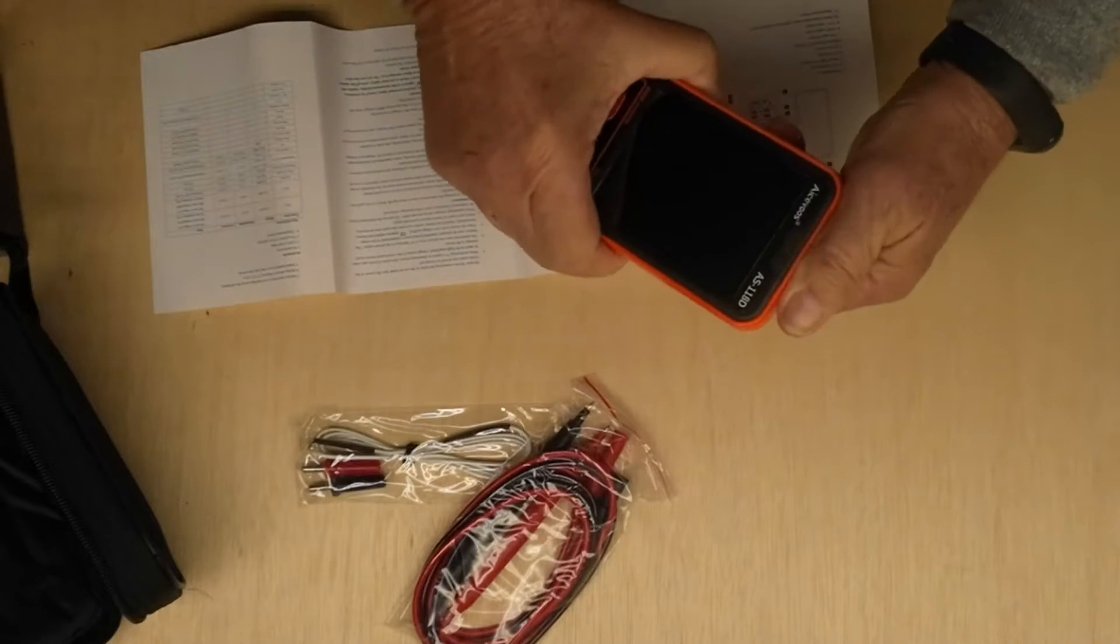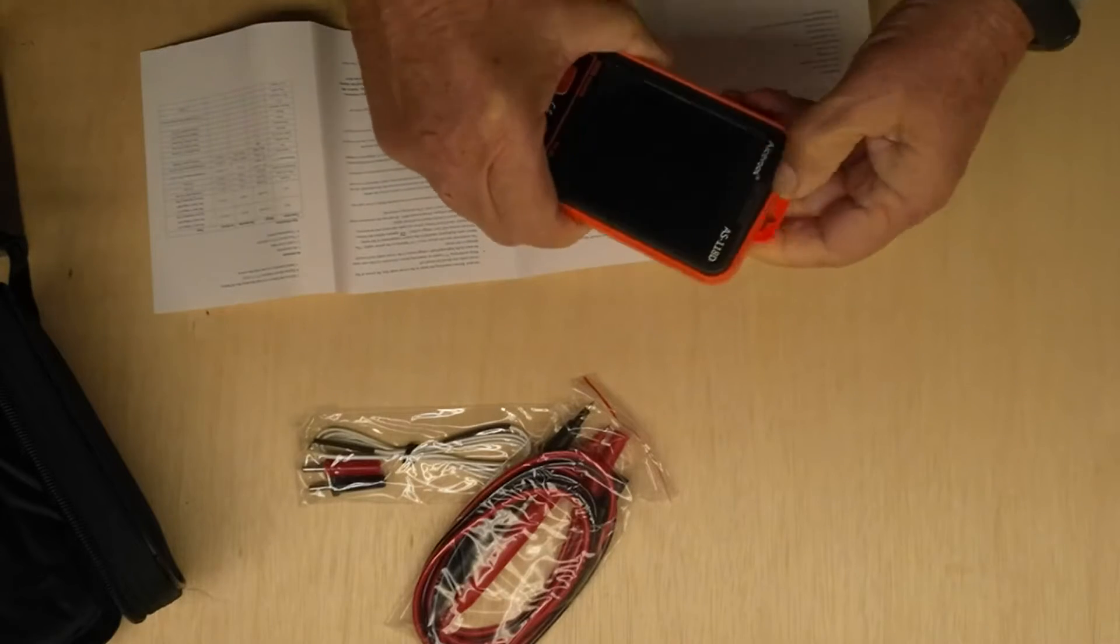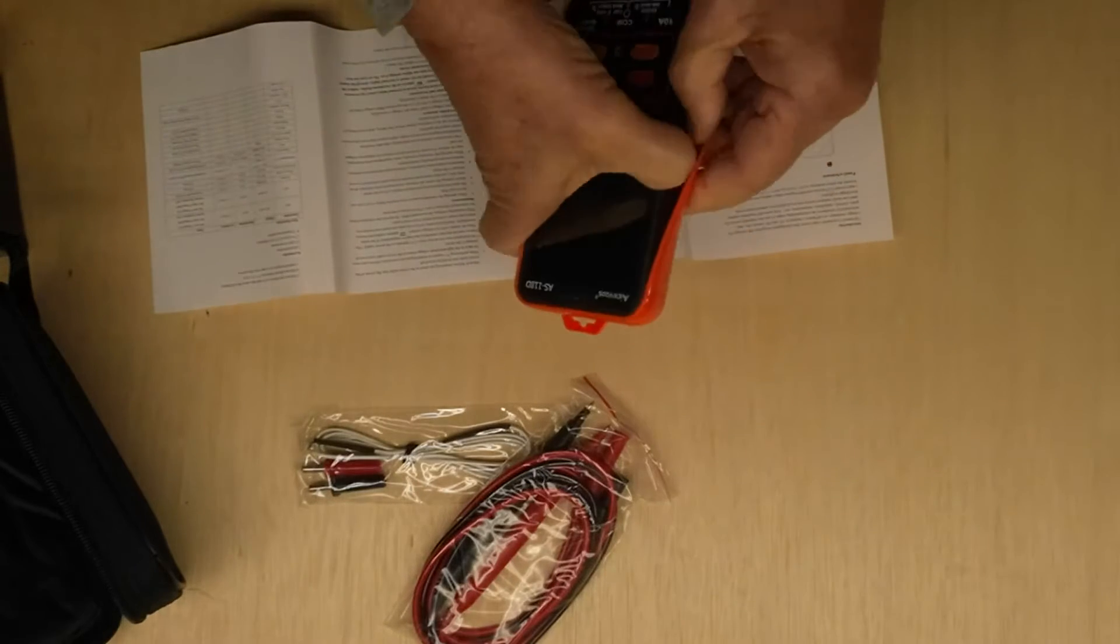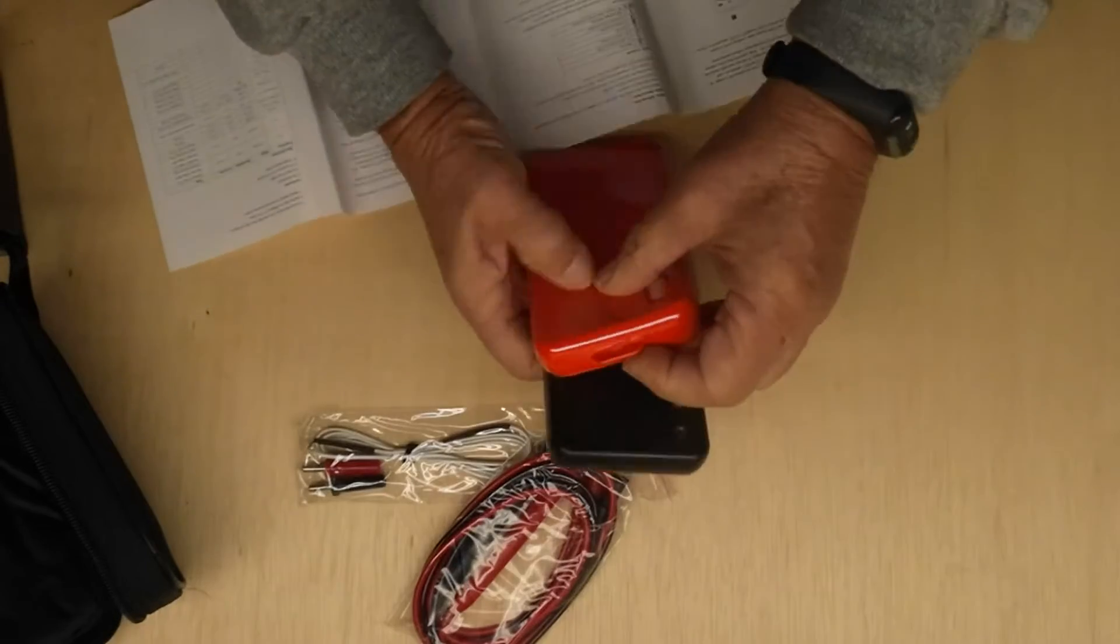One thing I didn't realize is that this orange is a protective covering for the meter. There we go.